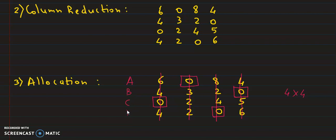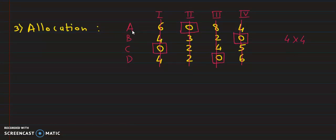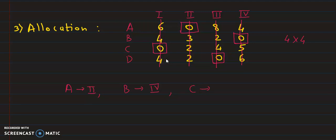The jobs are A, B, C, D and the machines are 1st, 2nd, 3rd, 4th. From the assignment: A will be given to the 2nd machine, B to the 4th machine, C to the 1st machine, and D to the 3rd machine. In this way we can complete this assignment problem. Thank you for watching the video.